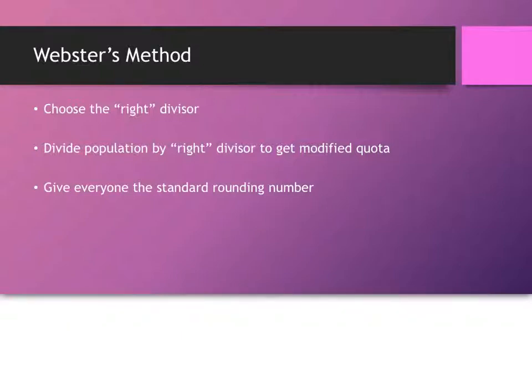And it turns out that Webster's method, because you're using the standard rounding, sometimes you'll have to pick a number a little bit above the standard divisor. Other times you might have to pick a number a little bit below the standard divisor. So it is a little bit trickier about where to go up or lower, but the number you choose will be closer to the standard divisor. And sometimes could even be the standard divisor.